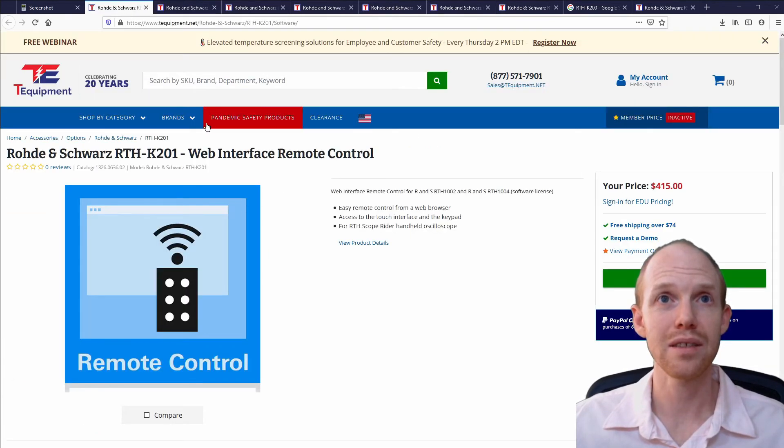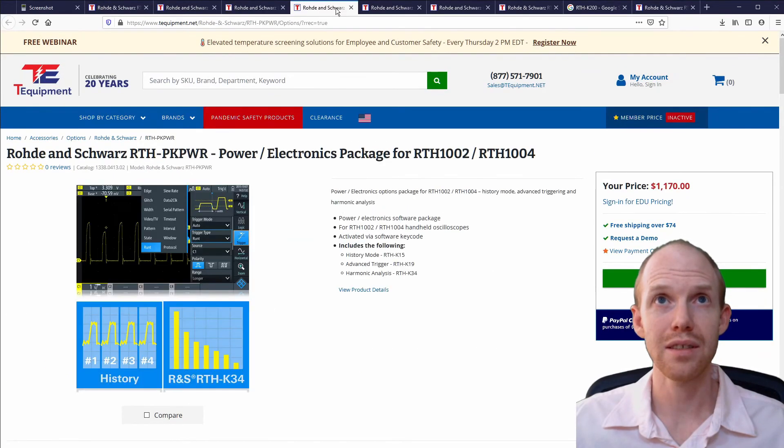This right here is the web interface remote control option, so $415 extra, I guess, if I want to be able to use the virtual scope on here. And then it looks like they do have this one, looks kind of cool for power electronics option. Might have to look into that.